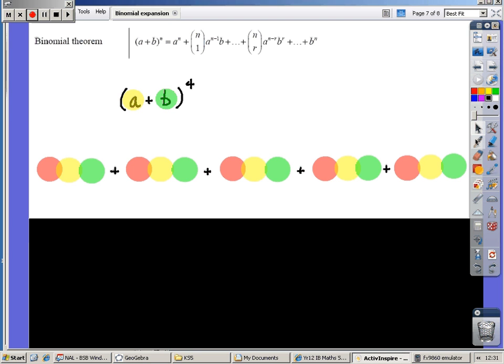When you create any binomial expansion, be aware that the three elements that you've got to consider are a coefficient, a power of A, and a power of B. You need to consider that each time. The nice thing about this is there are clear and easy patterns.